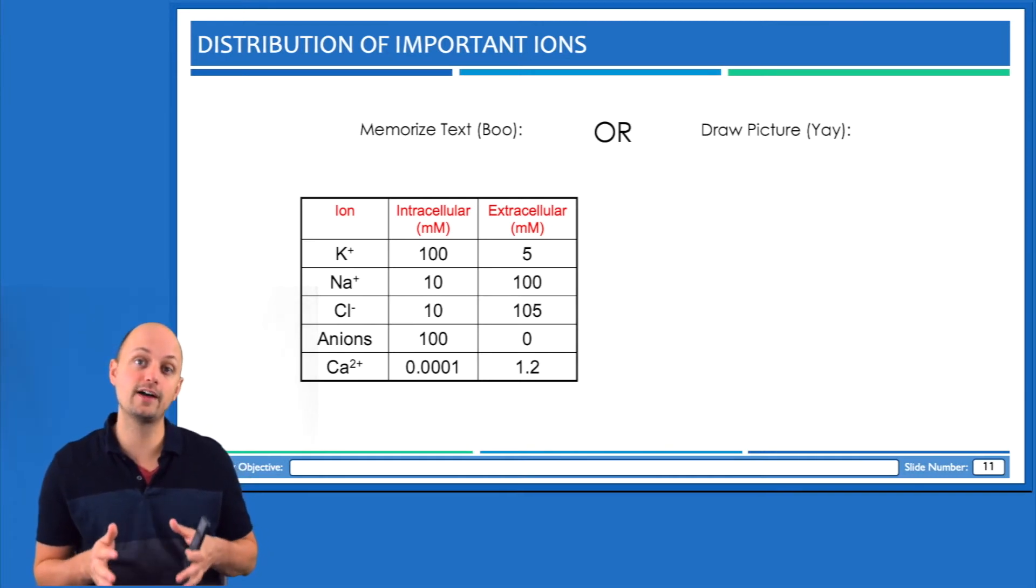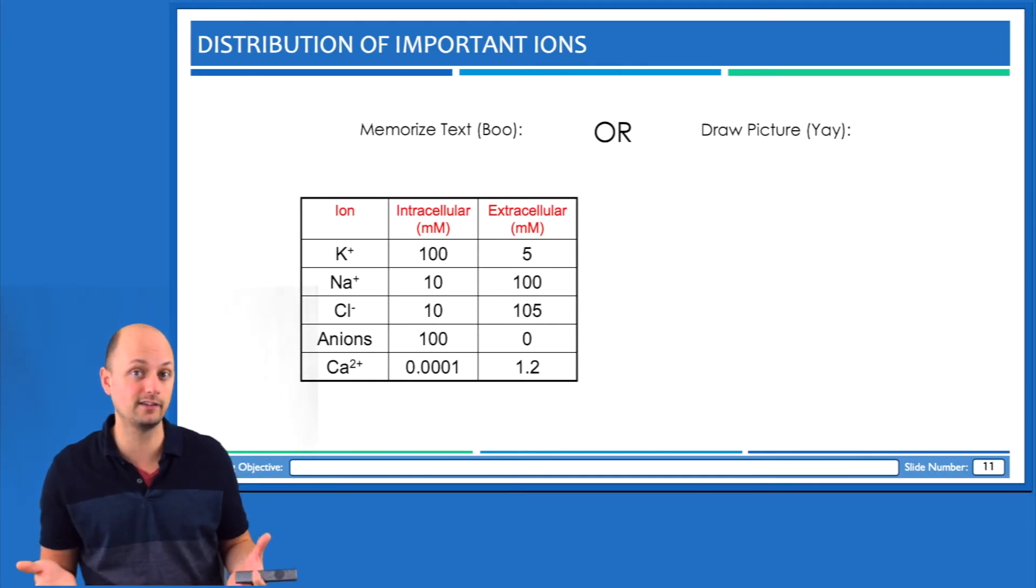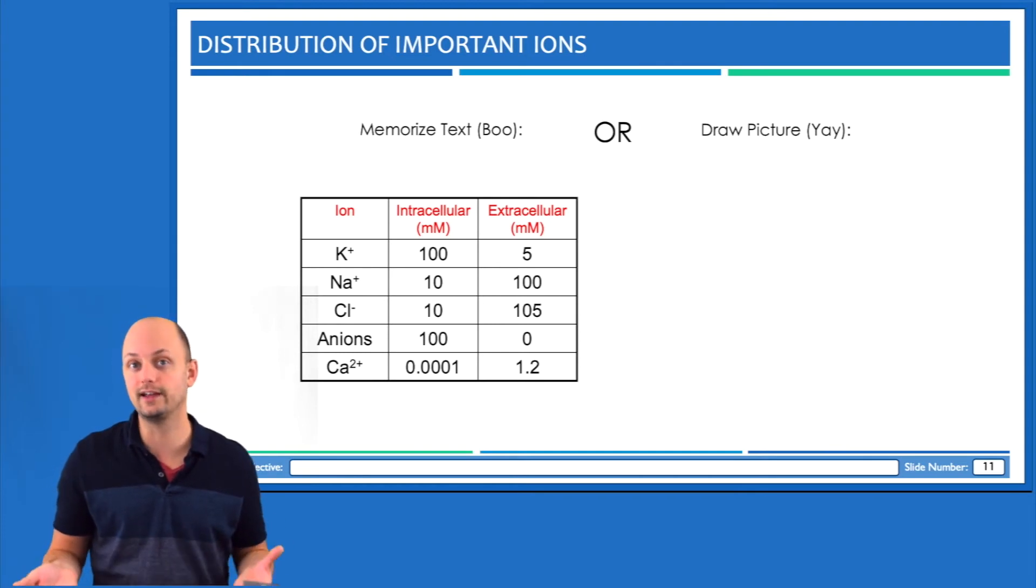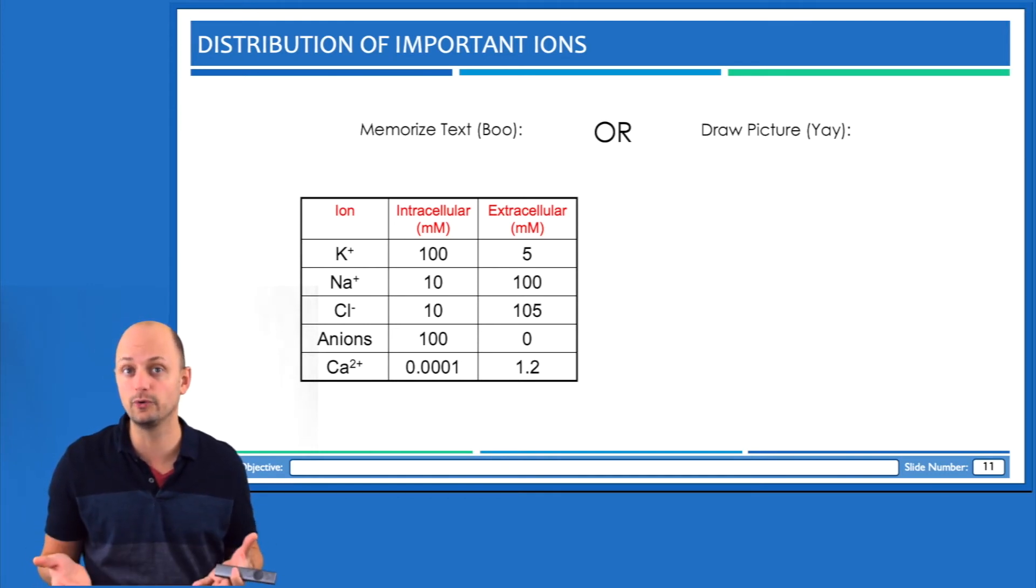You're going to want to focus on the values that are in this table. Potassium is at a concentration of about 100 millimolar inside the cell and 5 millimolar in the interstitial fluid, so therefore potassium has a relatively higher concentration inside the cell. Sodium is the opposite. It has a concentration of about 100 millimolar in the interstitial fluid and only about 10 millimolar in the cytosol, so its concentration is relatively higher outside the cell. Chloride is pretty similar to sodium except that its extracellular concentration is about 105 millimolar.